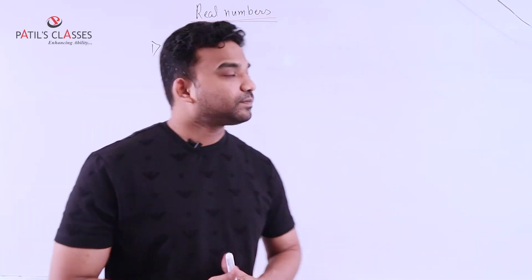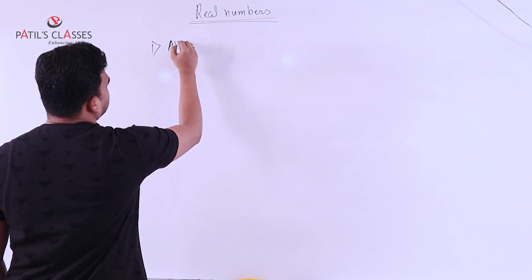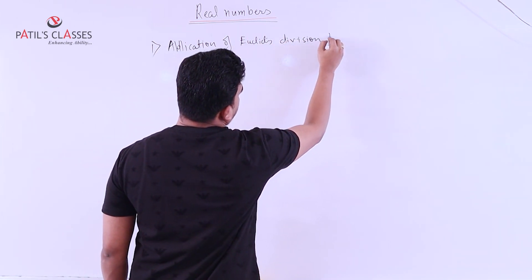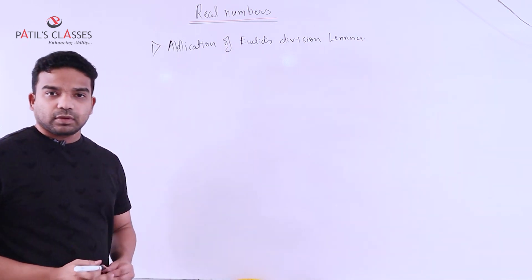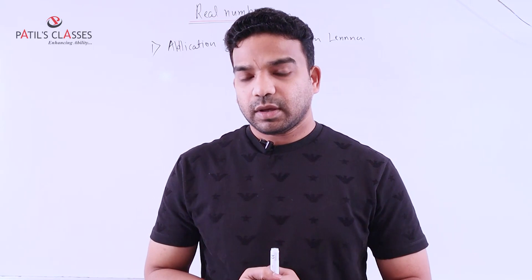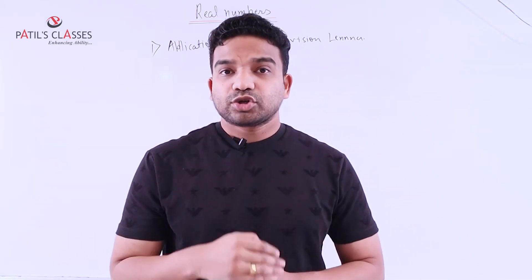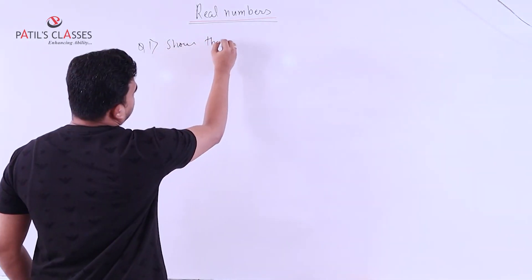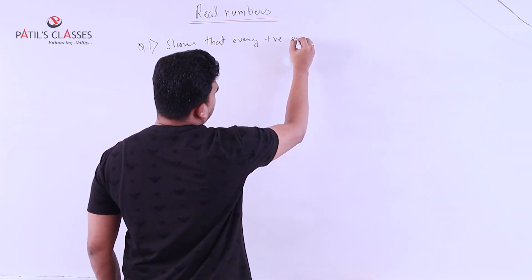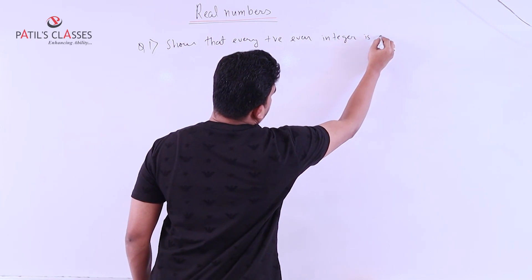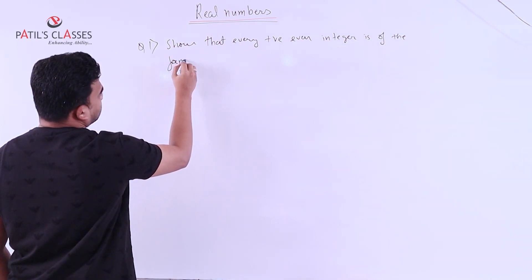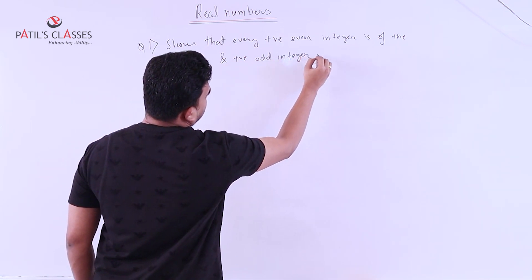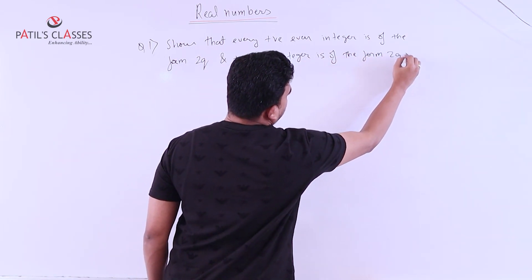The first topic is the application of Euclid's division lemma. To understand that application, we will take one question, which is as follows: Show that every positive even integer is of the form 2q, and every positive odd integer is of the form 2q plus 1.